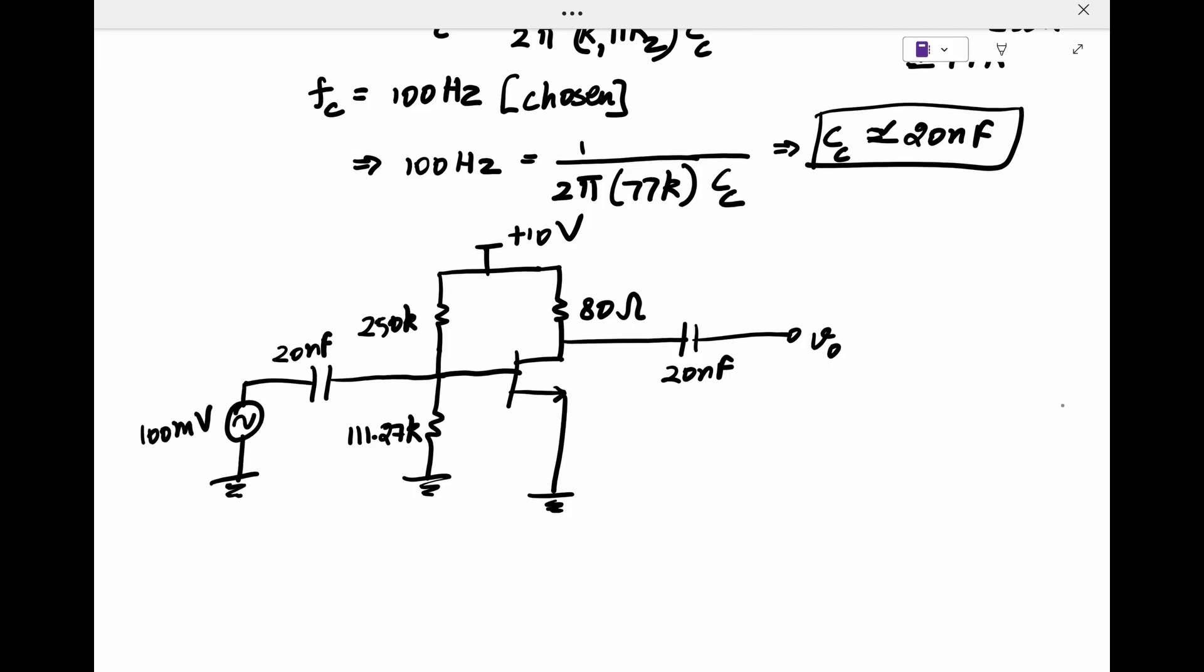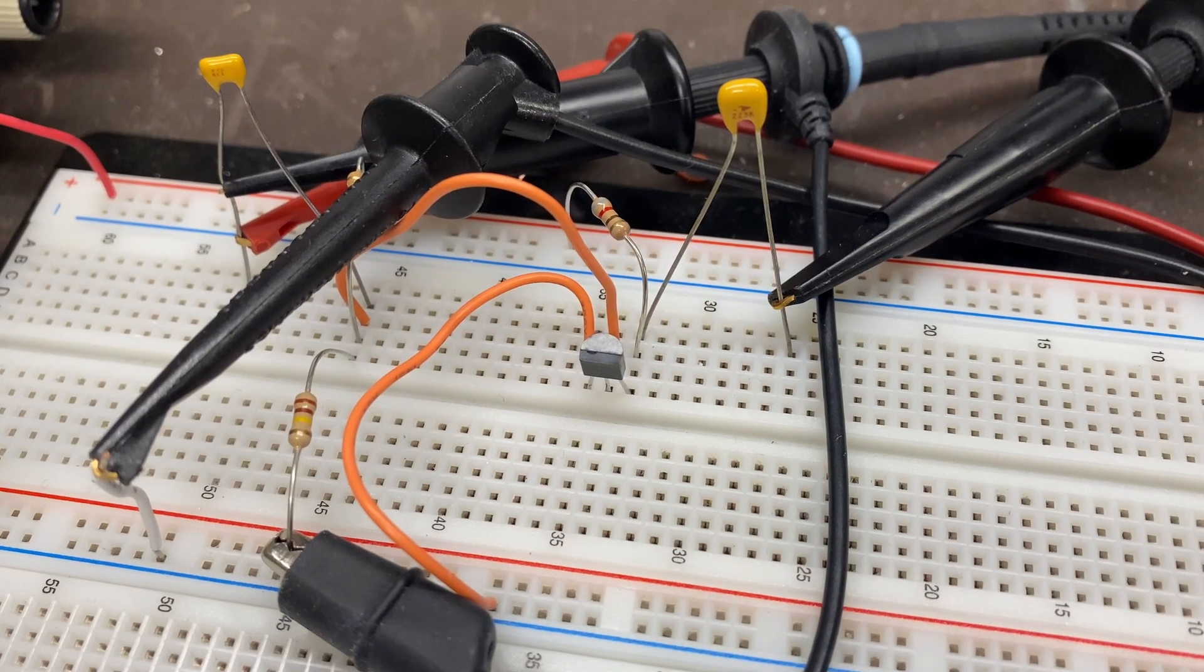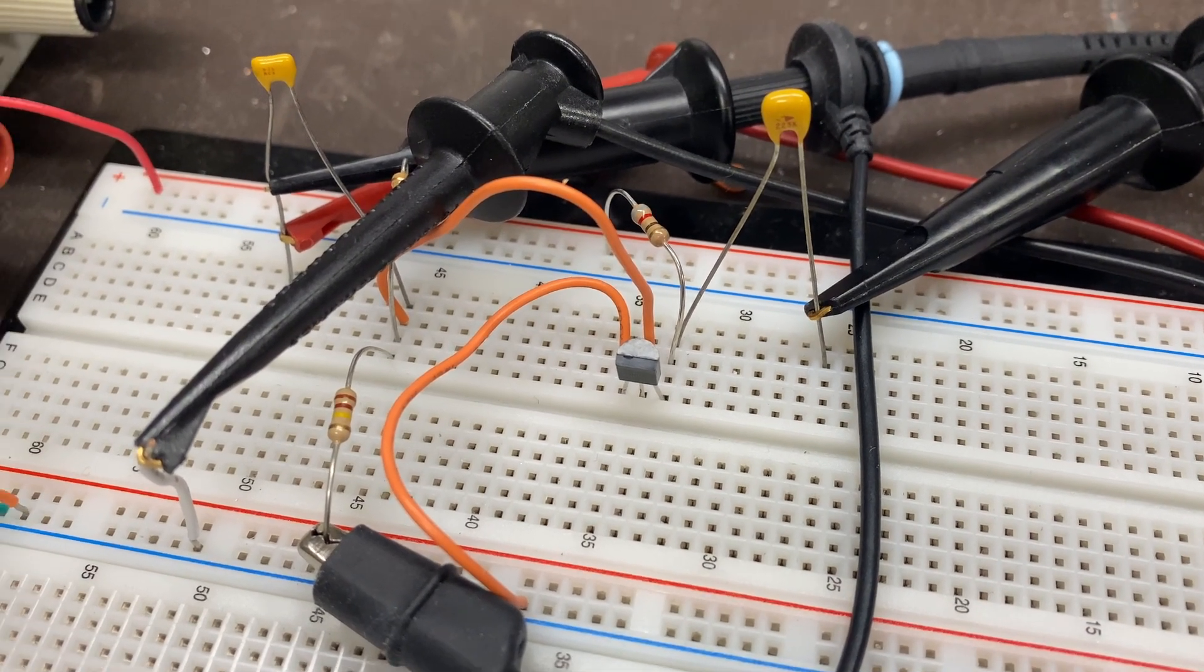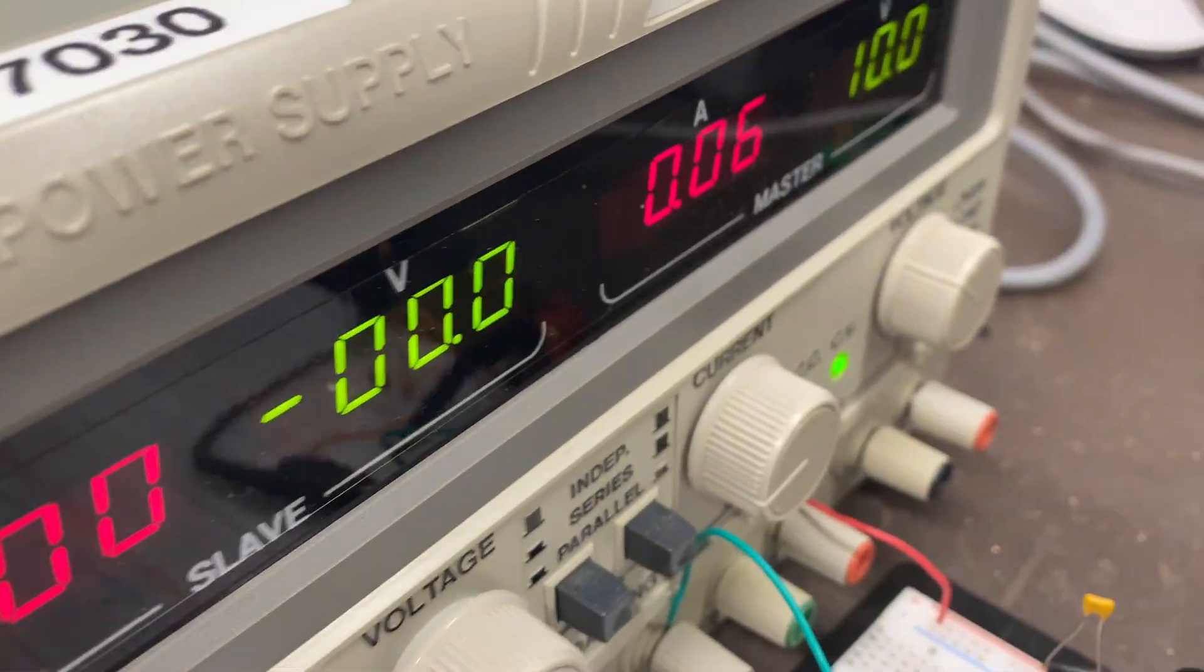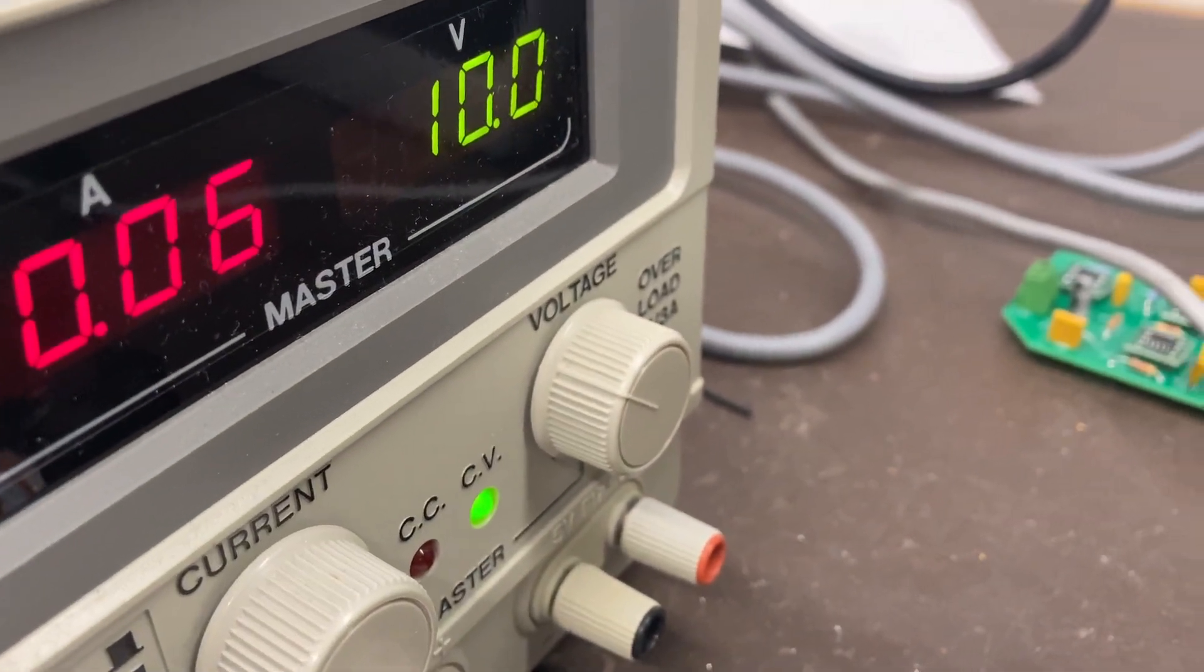Now, obviously, you cannot find the exact values of resistors up to two decimal places that we got from the theoretical design. We have used values close to the one obtained from the design. This is going to change the operating point VGS and thereby the drain current of the MOSFET.